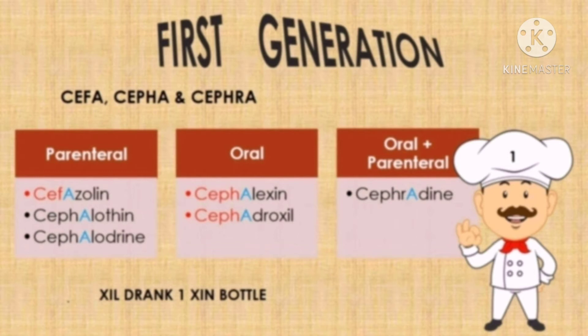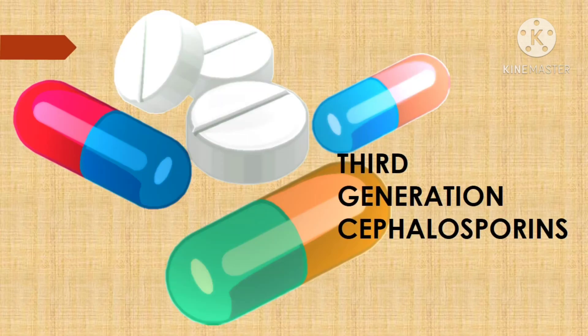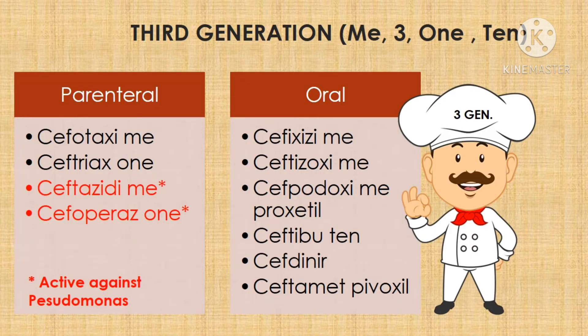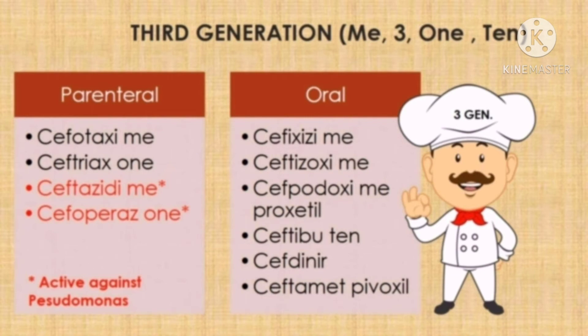We will skip second generation cephalosporins for now and come back to it at the end. A simple trick to remember third generation cephalosporins is that they all end in 'MI', 'one', or 'im'. There are two exceptions: cefdinir and moxalactam — they are third generation cephalosporins but do not have those endings. An important point: ceftazidime is the third generation antibiotic effective against Pseudomonas.